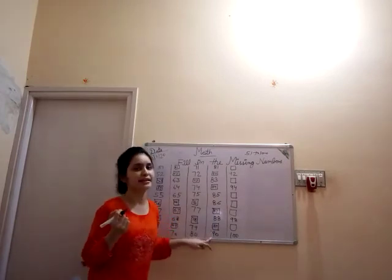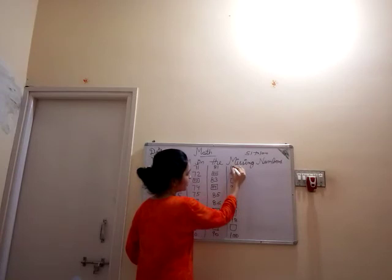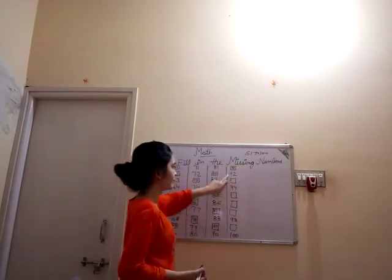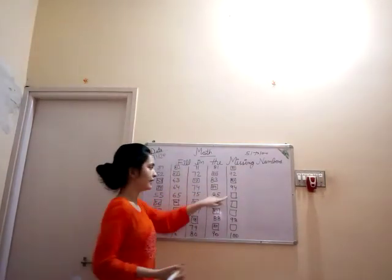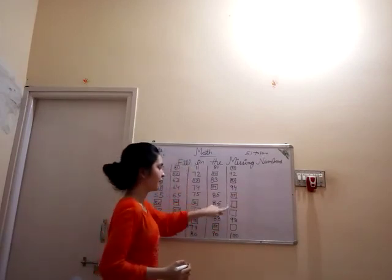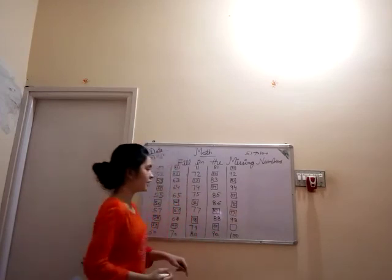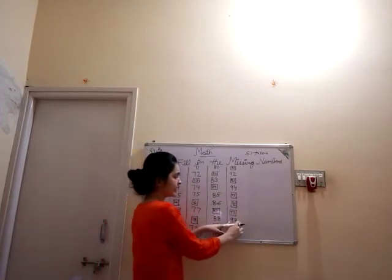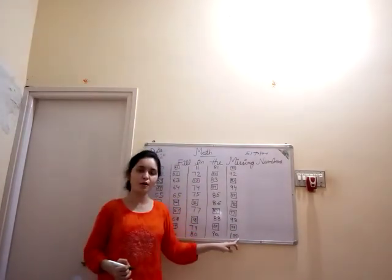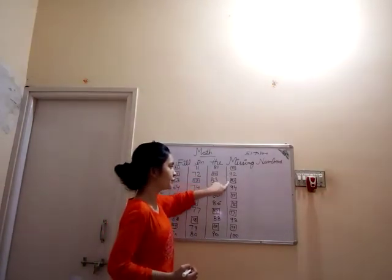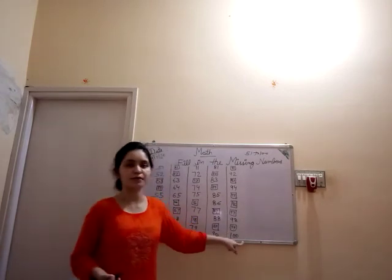90 ke bad? 9, 1, 91. 91 ke bad? 92. 92 ke bad? 93. 93 ke bad? 94. 94 ke bad? 95. 95 ke bad? 96. 96 ke bad? 97. 97 ke bad? 98. 98 ke bad? 99. 99 ke bad? 100. 91, 92, 93, 94, 95, 96, 97, 98, 99, 100.